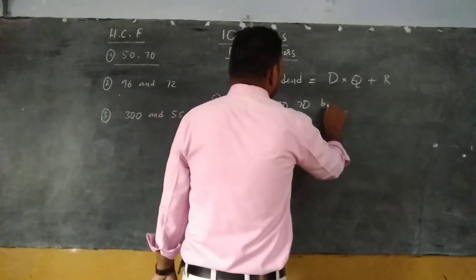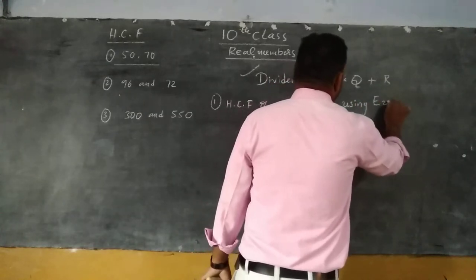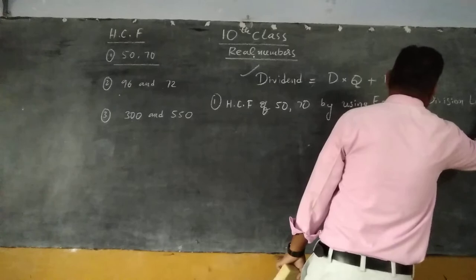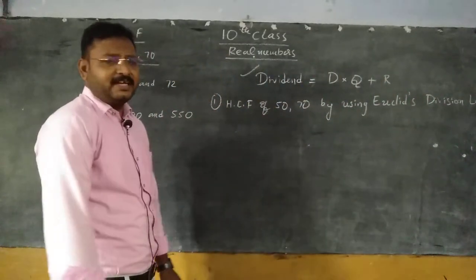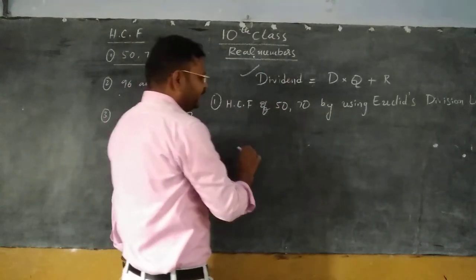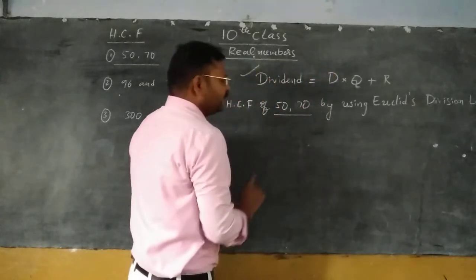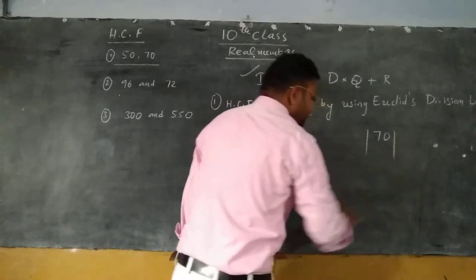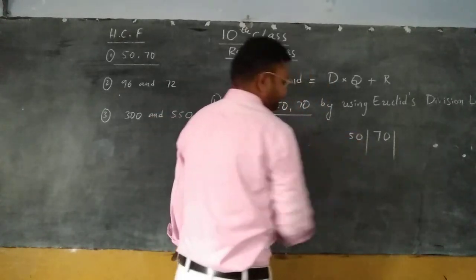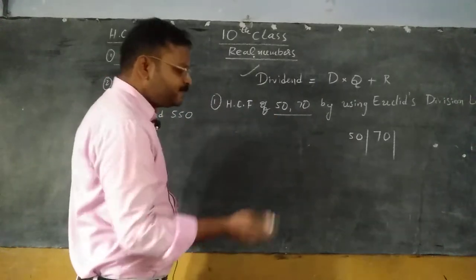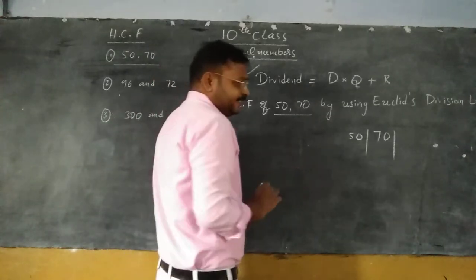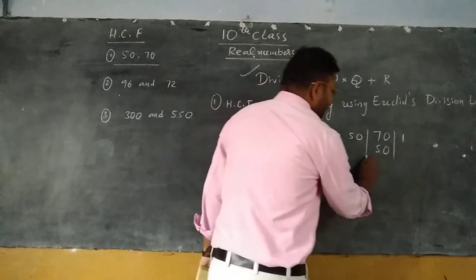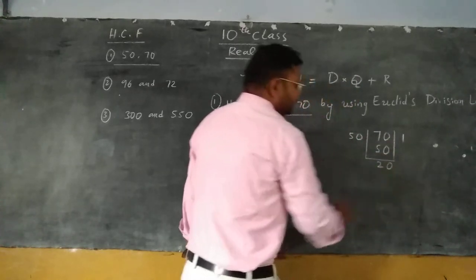For using Euclid's division lemma, I am going to find HCF. First, take the bigger number — what is the bigger number? 70 is the bigger number. Draw two lines and take the smaller number, 50, and divide. How many times does it go? 50 ones of 50. After subtraction, we get 20. 20 is the remainder.